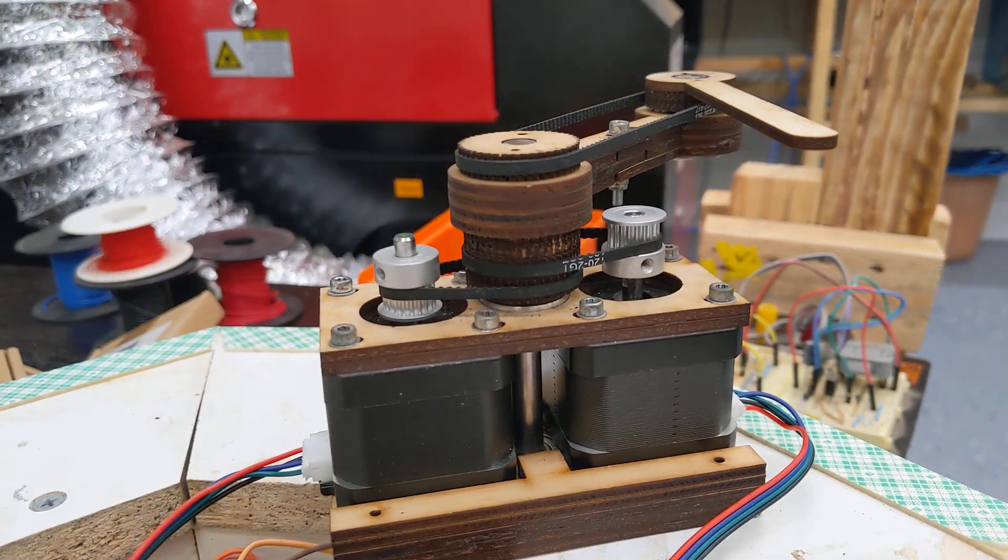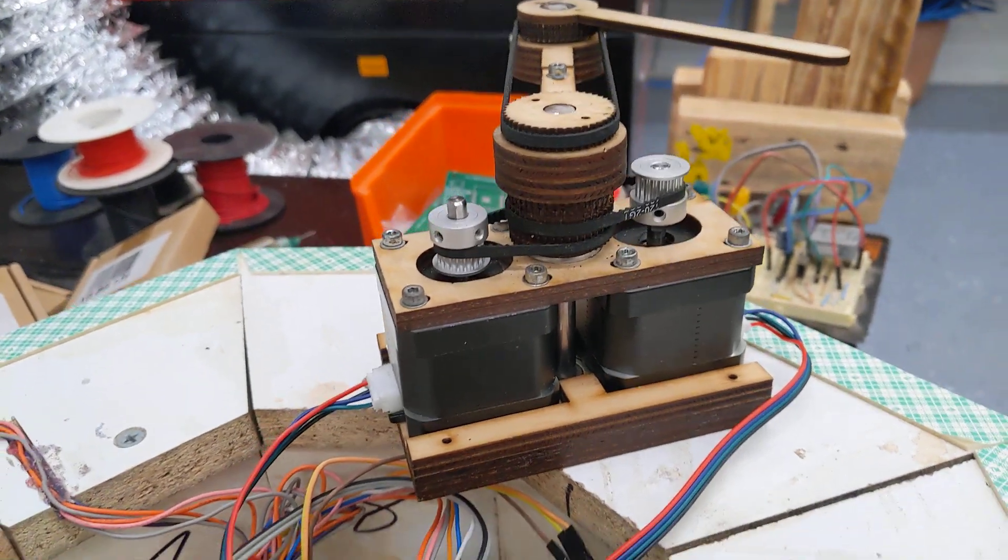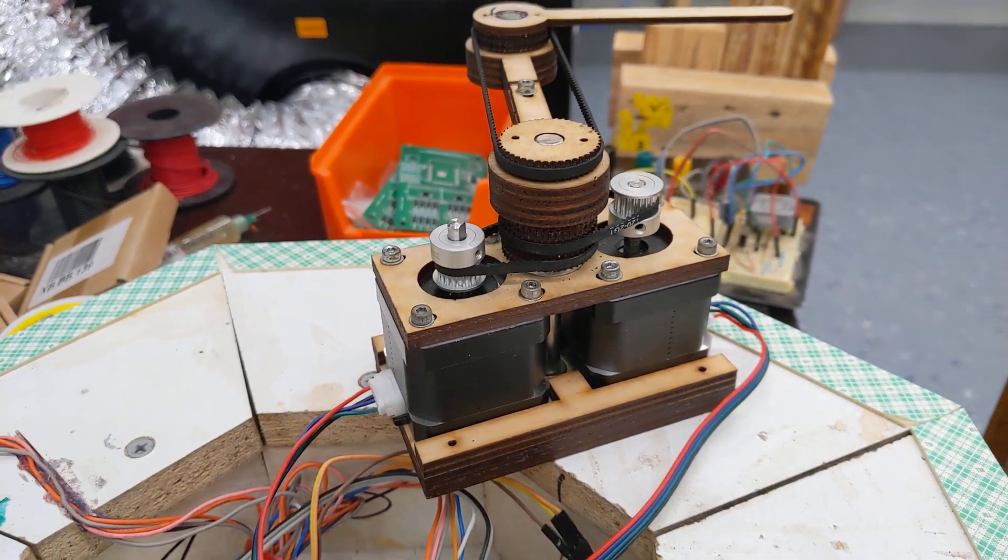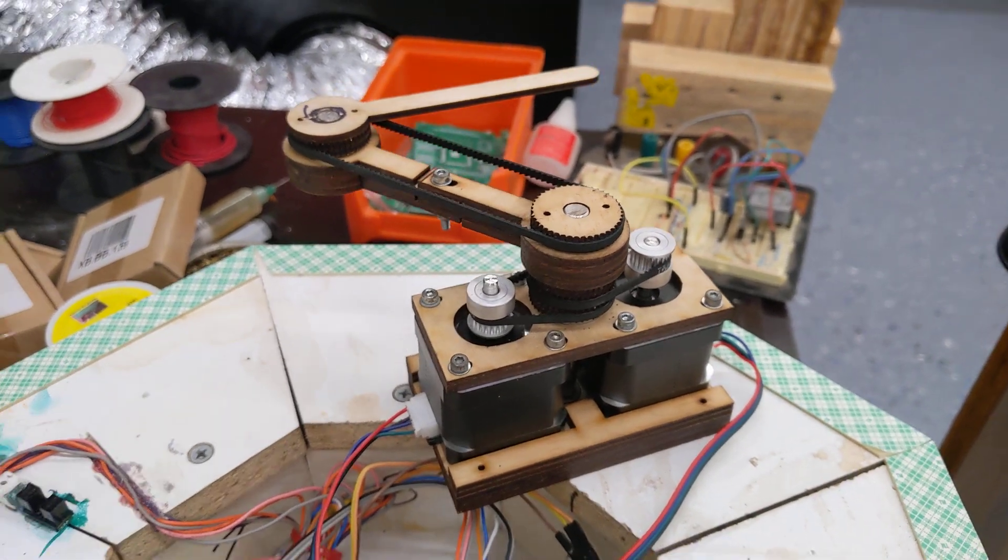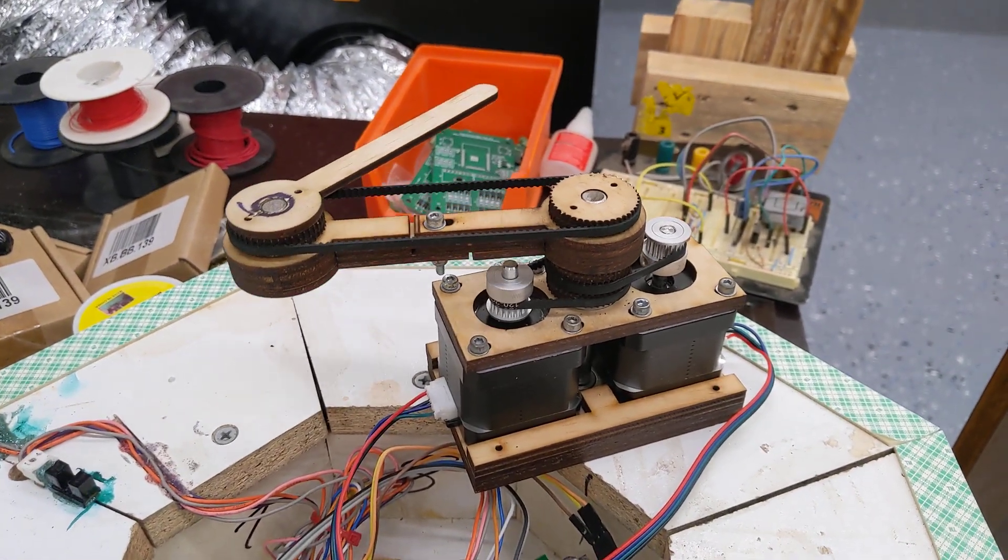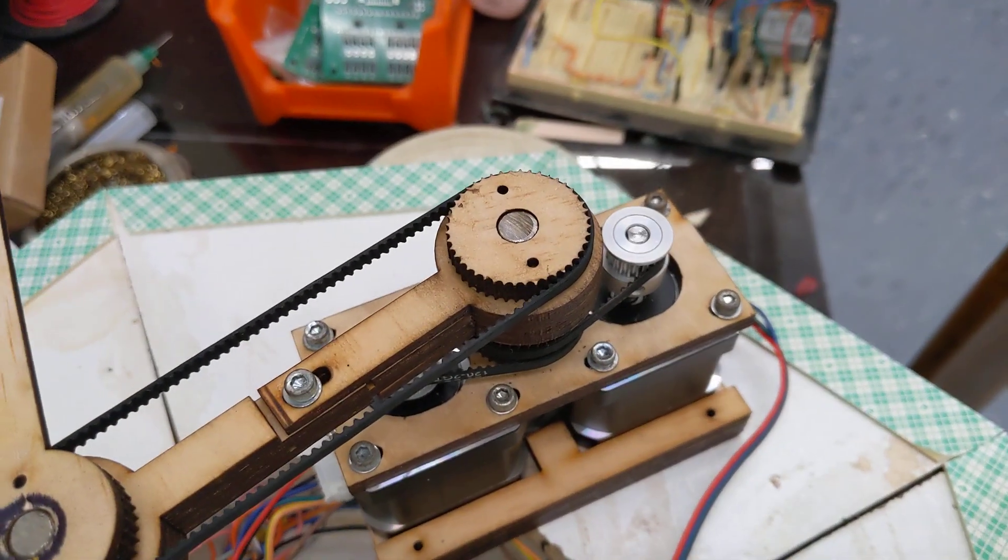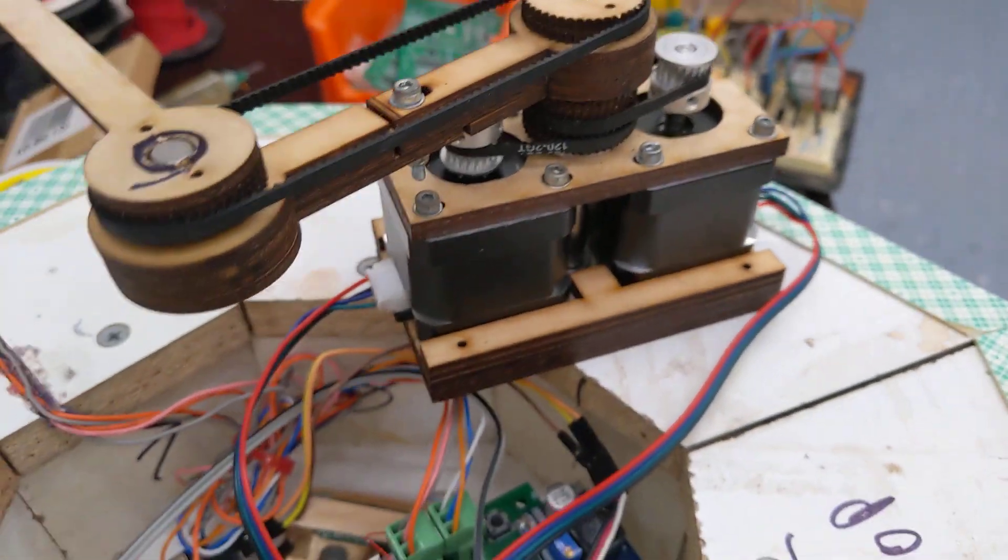This model is all made of laser cut plywood, so it's much faster to iterate on the design and making all the parts is a lot more straightforward. All the sprockets are laser cut, and there's steel shafts through there.